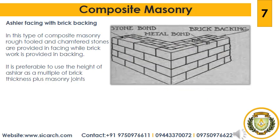The fourth type is ashlar facing with brick backing. In this type of composite masonry, rough tooled and chamfered stones are provided in the facing while brickwork is provided in the backing. It is preferable to use the height of ashlar as a multiple of brick thickness plus masonry joints.